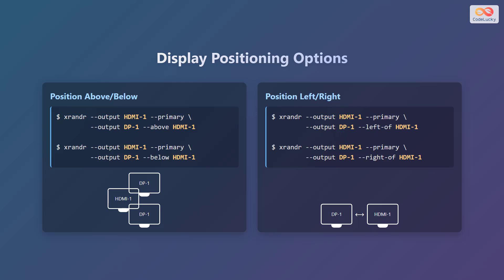With xrandr, you have several options for positioning your displays. To position a display above or below another, use the --above or --below options respectively. For example, to place DP1 above HDMI-1, use the command with the --above option. Similarly, --below will position the display underneath. To position a display to the left or right of another, use the --left-of or --right-of options. These commands allow you to arrange your monitors in a configuration that suits your workflow.